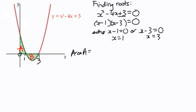Area A is going to be the integral from 0 to 1 of our function x squared minus 4x plus 3 with respect to x. If we integrate that, add 1 to the power, divide by the new power. We have a constant.